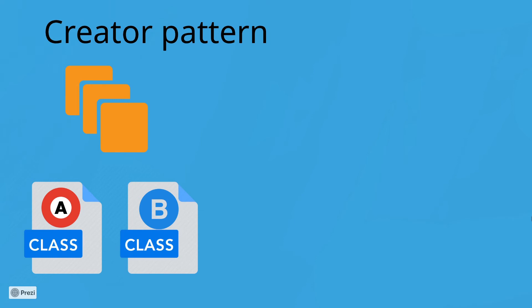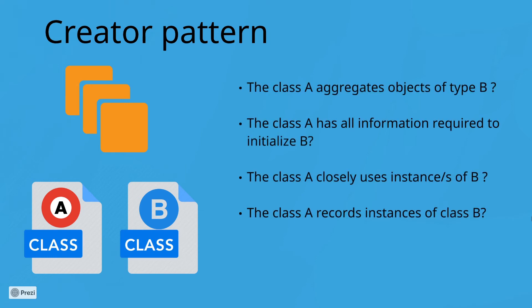According to Creator, one or more rules should be met so that class A could create new instances of class B. The first question is: does the class A aggregate objects of type B?